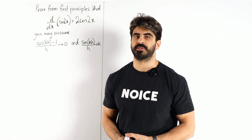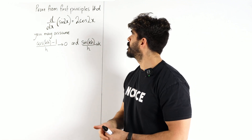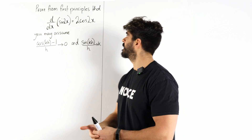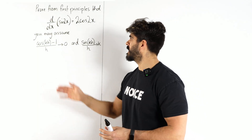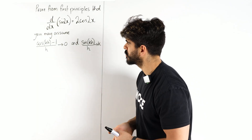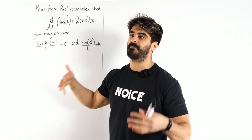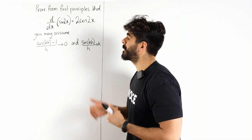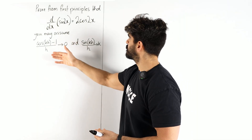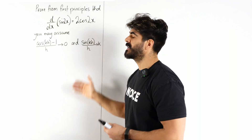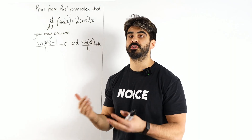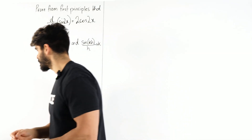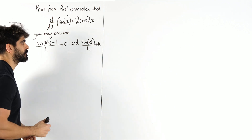A-level first principles. Prove from first principles that the differential of sin 2x is 2cos 2x — you may assume these relationships, which basically come from the small angle approximations. The basic proof is doing it for sin x and proving it differentiates to cos x. In year one we only do this with x squared and simple polynomials, so let's remind ourselves of the first principles formula.